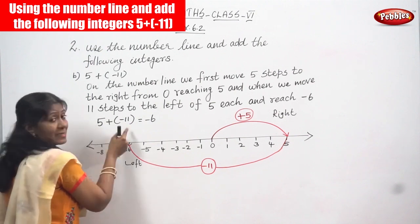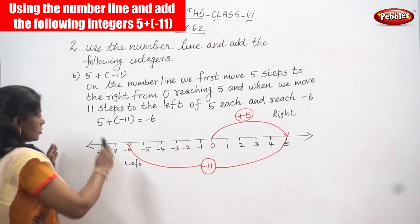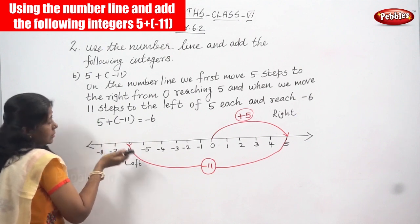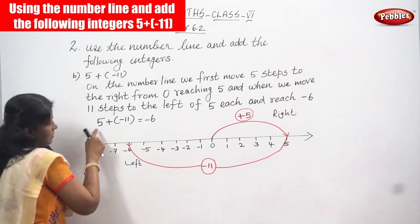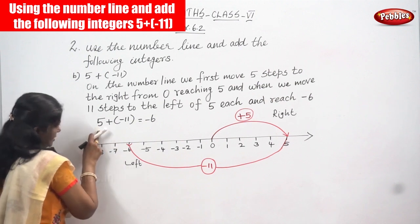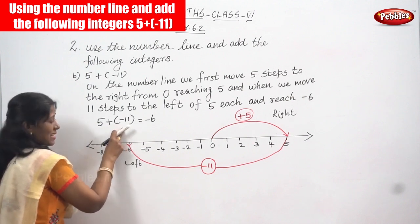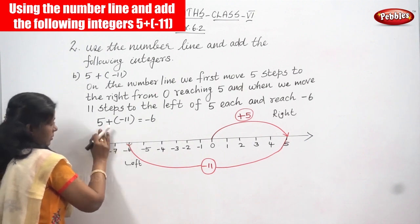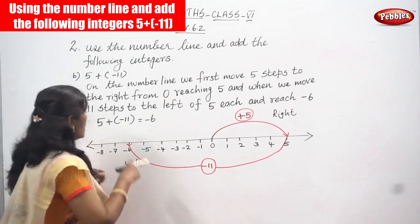So the question is 5 plus minus 11. This is a positive integer and this is a negative integer, so we are going to add them together. If you have different signs — whether it is a positive and negative — we have to check. The first number is a positive integer, and the next number is minus 11, which is a negative integer. If you have different signs, you are not going to add; you are going to subtract only.